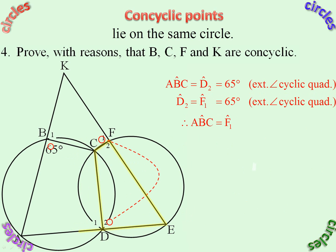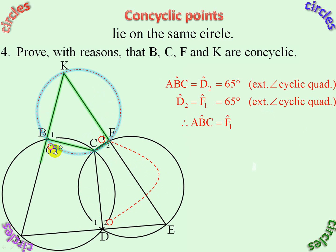That angle there is equal to that angle there — that's the exterior angle, that's the interior opposite — making it cyclic. The reason: Converse Exterior Angle Cyclic Quad.